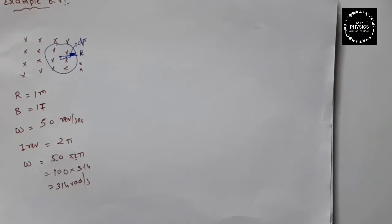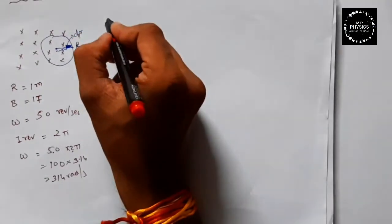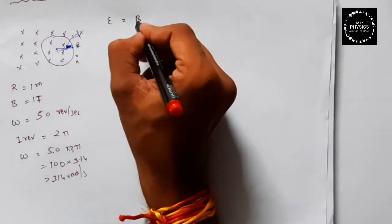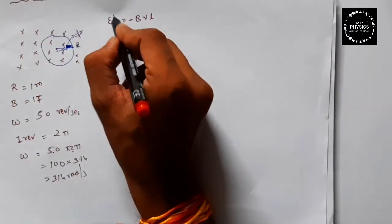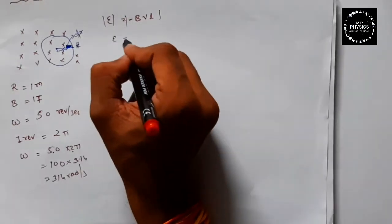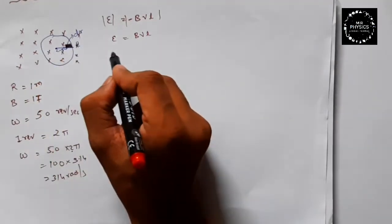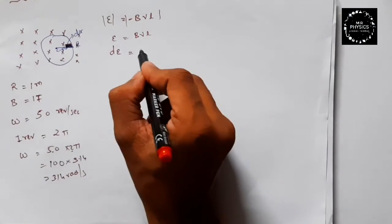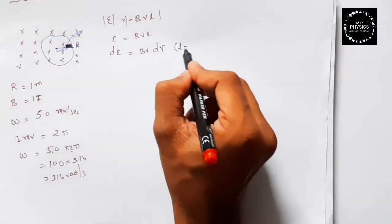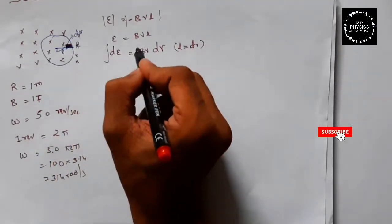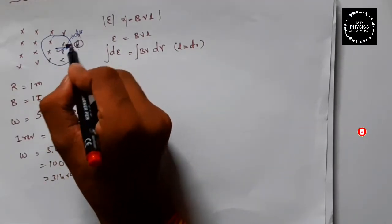We need to prove the formula for EMF. Epsilon is equal to Bvl — we are using magnitudes. Here we are dealing with a small portion of the rod; the small element length l is represented by dr. So we write the small EMF as dε = Bv dr.